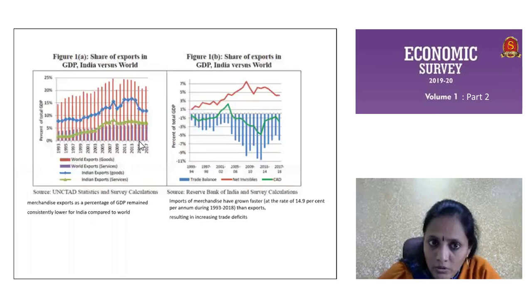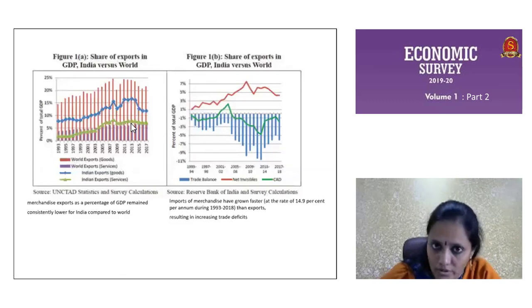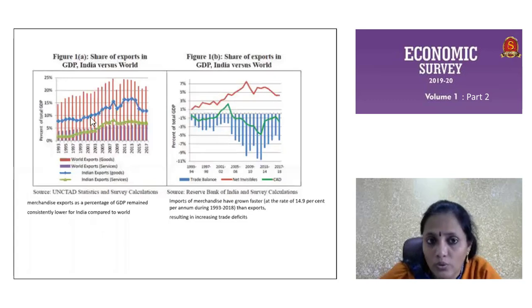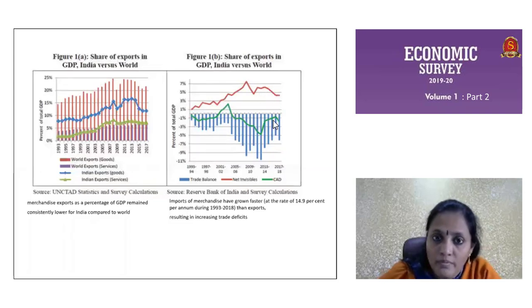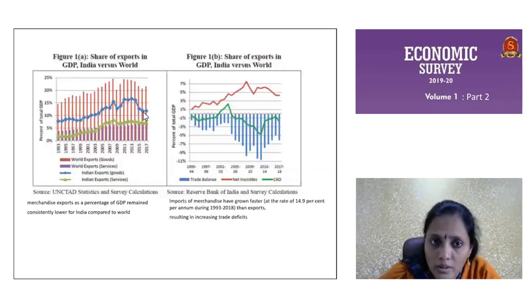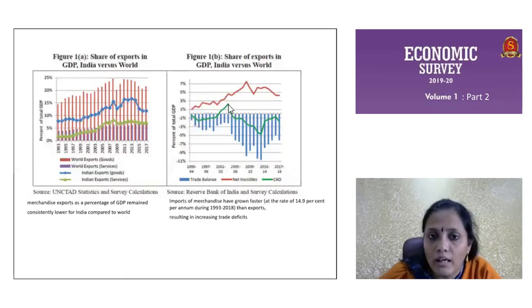Many of you may be thinking why goods export is higher than services export. Are we not having a trade deficit? Your question will be answered in the next graph where you will see the trade balance is negative because it is grouping below the zero line. Net invisibles means export of services minus import of services — when netted out, services actually becomes positive. Whereas when talking about goods, the balance of trade is actually negative because import of goods is very high.